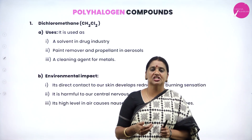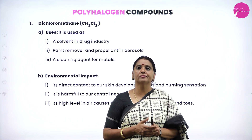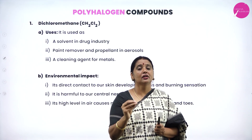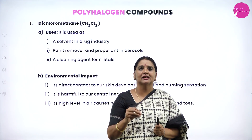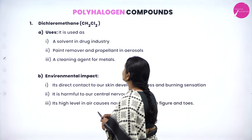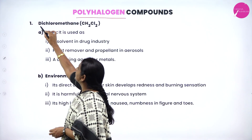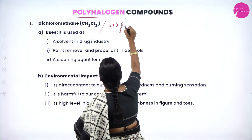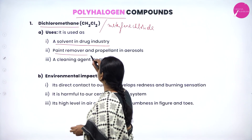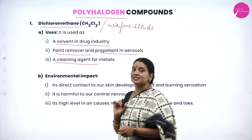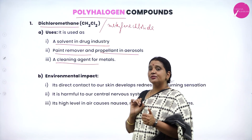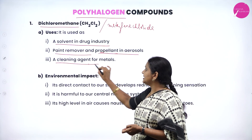Now for the last part of this chapter: polyhalogen compounds. First is dichloromethane (trivial name: methylene chloride). Its uses include: solvent for the drug industry, paint remover, propellant in aerosols, and cleaning agent for metals. Its environmental/side effects: direct contact with skin causes redness and burning sensation; it is harmful to the central nervous system; high-level exposure causes nausea and numbness in fingers and toes.